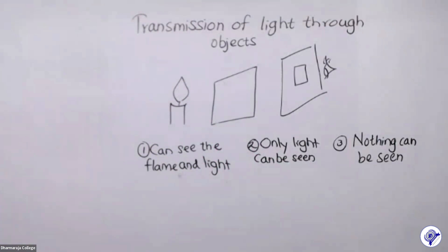Until we meet again with the second part of the lesson, let's review what we were learning. We learned the requirements for vision and how to observe those two requirements. We also learned about the transmission of light through objects and through liquids. In the second part we will learn more about light rays and light beams. Goodbye to all of you.